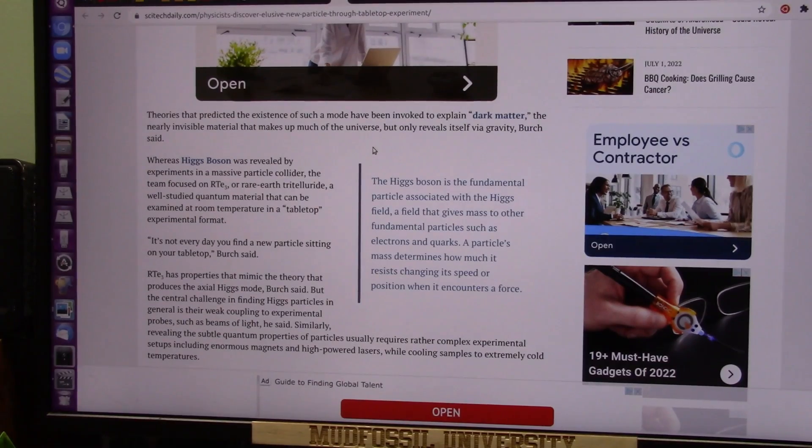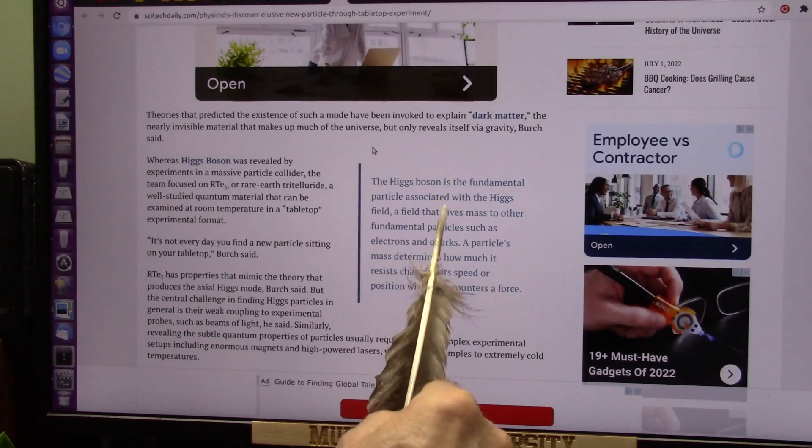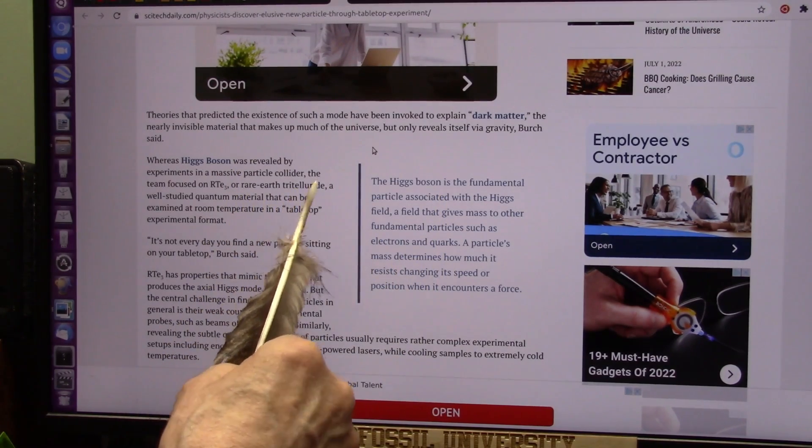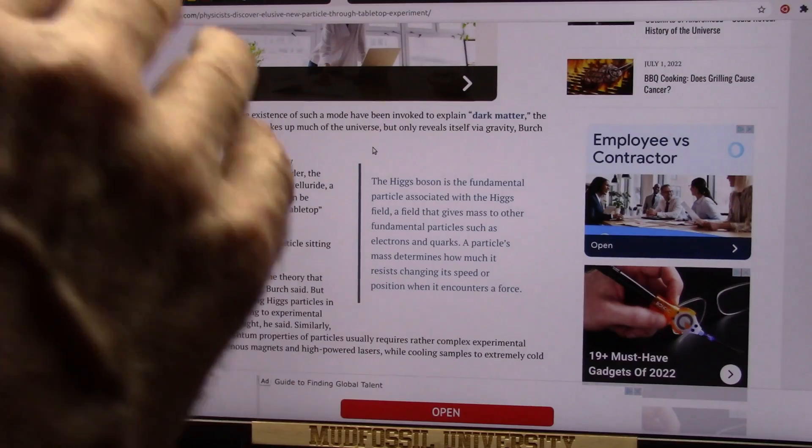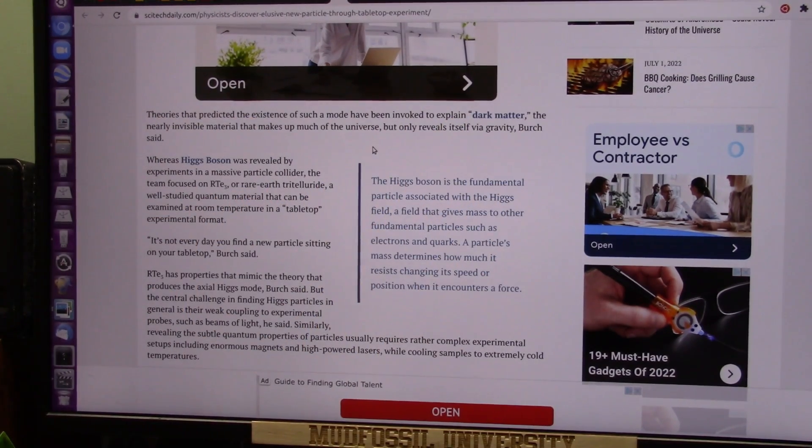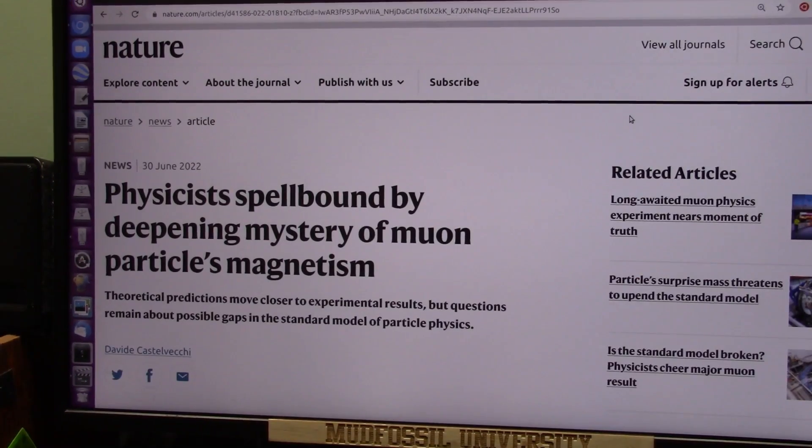Now, this is all about dark matter, gravity, Higgs bosons. Now, apparently they're using some kind of rare earth element and hitting it real hard and blowing off these particles. We're just using light.